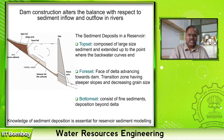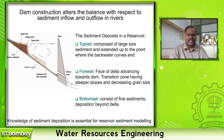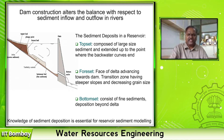The first is topset — the delta, consisting of larger-size sediment, extending up to the backwater curve. The second is foreset — the face of the delta where medium-size sediments get deposited. It is the transition zone having steeper slopes and decreasing grain size. Bottom set is fine sediments that deposit in very low quantity in the dead storage. Knowledge of sediment deposition is essential for designing the reservoir dead storage volume.